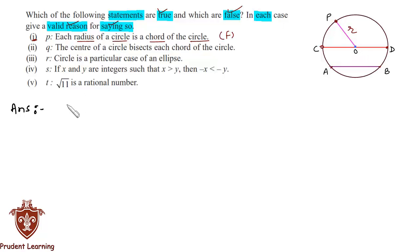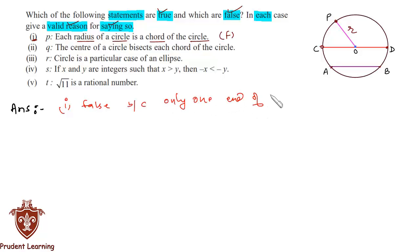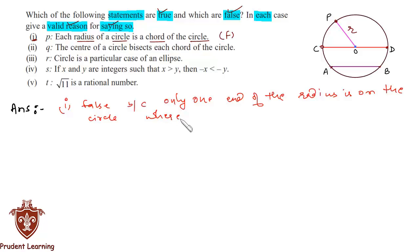The answer: this statement is false because only one end of the radius is on the circle, whereas a chord must have both ends on the circle.